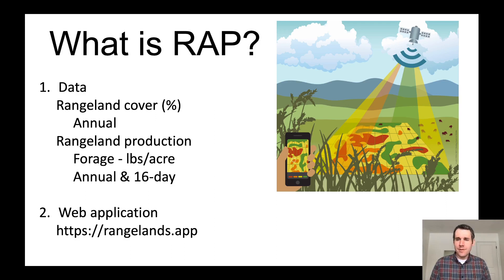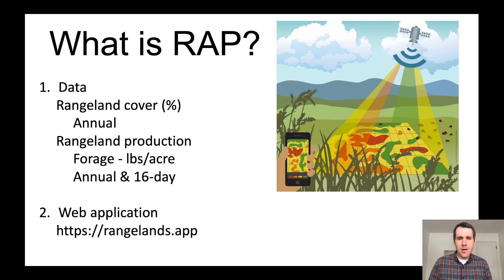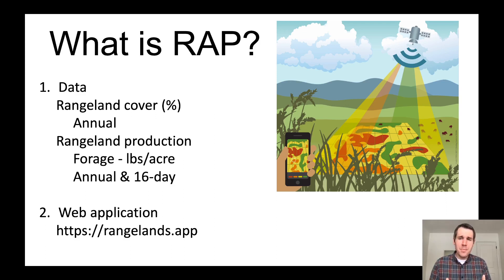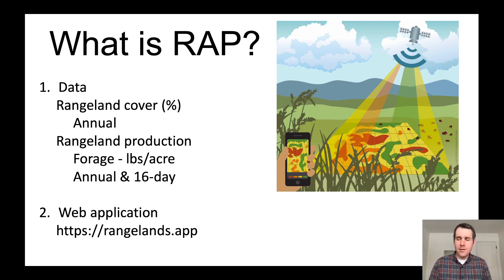So what is RAP? RAP is actually two things. The first is a group of data sets that we've produced. The two primary data sets are an estimate of rangeland cover available at annual time steps, and an estimate of rangeland production — that is herbaceous forage measured in pounds per acre. Both these data sets are available for the entire western United States and from the mid-1980s to the present day.